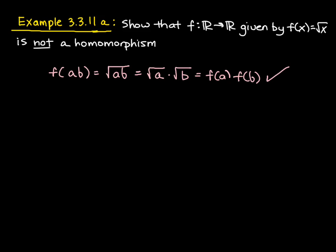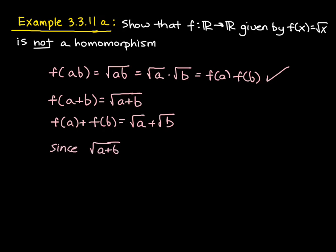So let's see what happens when we try the other criteria. So here we've got f of A plus B, and that is equal to the square root of A plus B. So in a separate line, now I'm going to try f of A plus f of B, and that's going to equal the square root of A plus the square root of B. So here's where our contradiction happens. Since square root of A plus B does not equal the square root of A plus B, f is not a homomorphism.